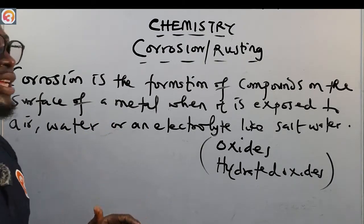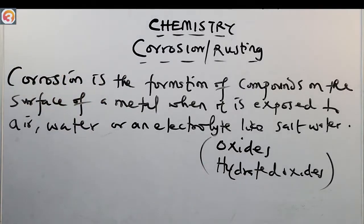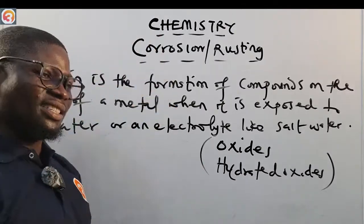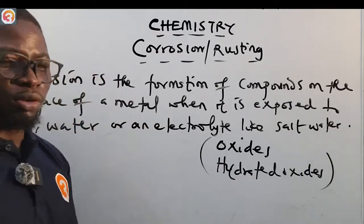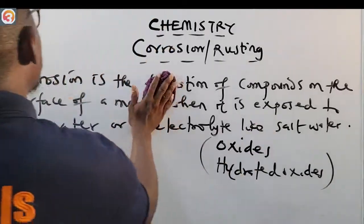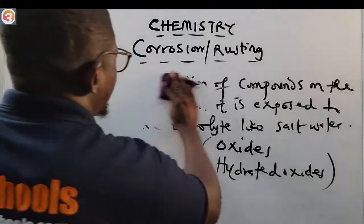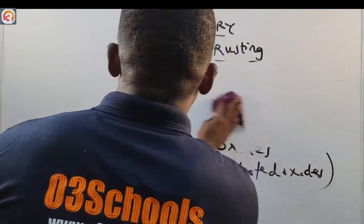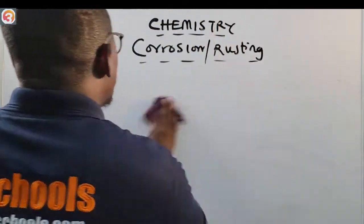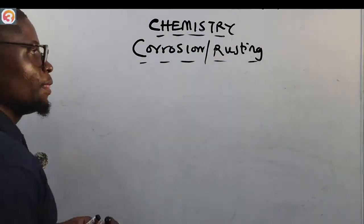From this definition we can now explain rusting. Rusting is like a degradation that happens to a metal. Rusting is a degradation process that occurs in the presence of oxygen and moisture. Corrosion itself is a redox process.